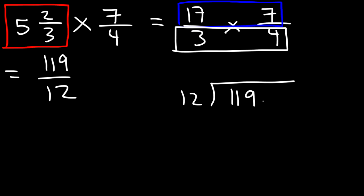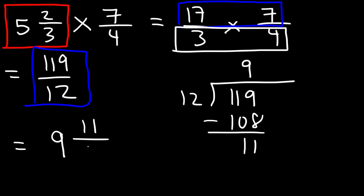12 times 8 is 96, 12 times 9 is 108, 12 times 10 is 120 which exceeds 119 so that's too much. So 12 goes into 119 nine times. 12 times 9 is 108. 119 minus 108, that's 11.